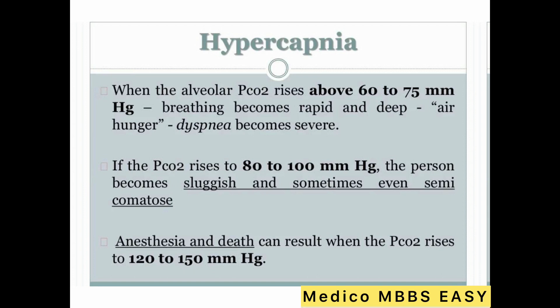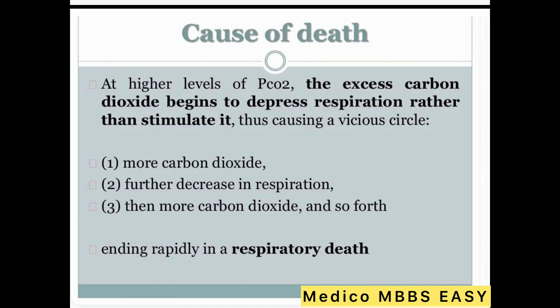Anesthesia and death can result when the partial pressure of carbon dioxide rises to 120 to 150 mmHg. At higher levels of partial pressure of carbon dioxide, the excess carbon dioxide begins to depress respiration rather than stimulate it, causing a vicious circle: more carbon dioxide leads to further decrease in respiration, then even more carbon dioxide accumulates, ending rapidly in respiratory death.